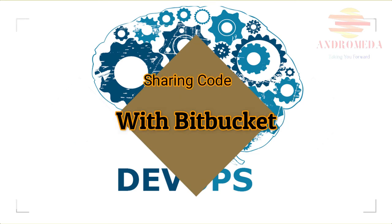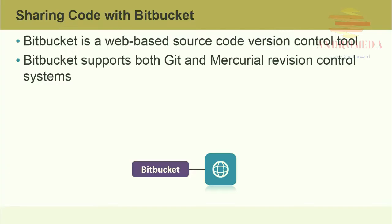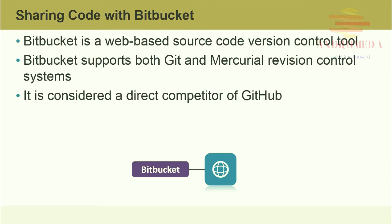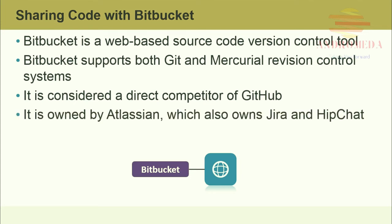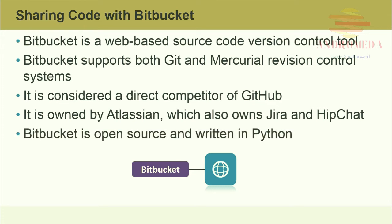Bitbucket is a web-based source control version control tool that supports both Git and Mercurial revision control systems. This is an important point as Bitbucket is the largest source control versioning tool that supports both the popular Git and the more refined Mercurial communities. Considered a direct competitor of GitHub, it is the second most popular free source control tool ahead of Stash and Script. Owned by Atlassian, who also owns both Jira and HipChat, Bitbucket started out as an independent project in 2008 and supported Mercurial only. Git support was added in 2011, just after being purchased by Atlassian. Bitbucket is open source and written in Python.